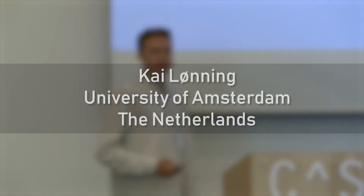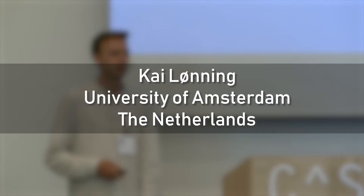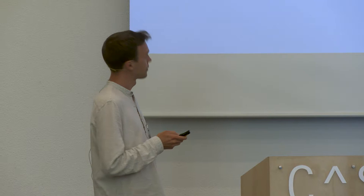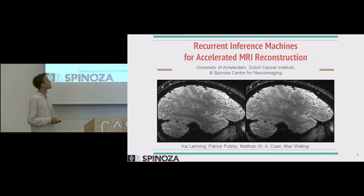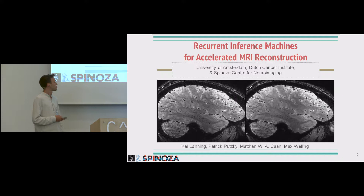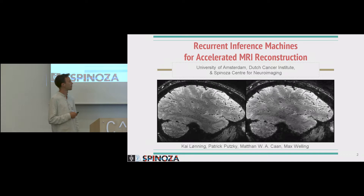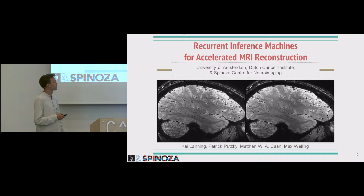Hi everyone. Thank you for being here, and thank you very much to the organizers for allowing me to present my work. I'm happy to be here to present recurrent inference machines for accelerated MRI reconstruction. What you see here, this image on the right, is basically our algorithm in action, where we go from a sparsely-sampled MRI image and through an iterative algorithm that I'm about to explain, try to reconstruct the ground truth image seen on the left.